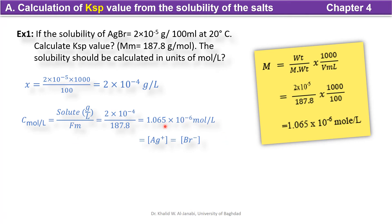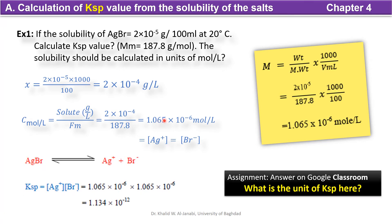This value represents the concentration of Ag+ ions, the silver ions, and the bromide as well. Now by applying this value into the equation of Ksp, we can get the value of Ksp. Your assignment is to tell the Ksp unit here. What is the unit of Ksp in this example? Please answer it in Google classroom. Thanks a lot.